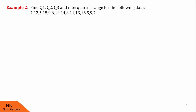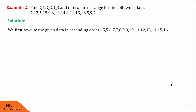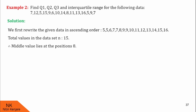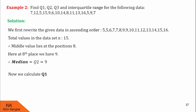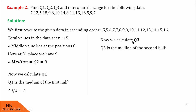Now let us proceed to the next example, where we again find Q1, Q2, Q3, and IQR. We rearrange the data in ascending order. There are 15 data values — again an odd number — so the midpoint is at the 8th place. Therefore the median, which is quartile two, is the 8th value: 9. So Q2 is 9. Below this we have 7 data values, so Q1 is at position 4, and at the 4th position we have value 7. So Q1 is 7. Similarly, the median of the upper half is 13, so Q3 is 13. IQR is Q3 minus Q1 = 13 minus 7 = 6.